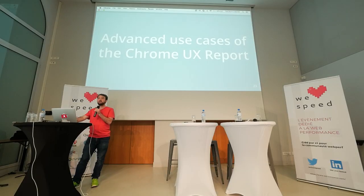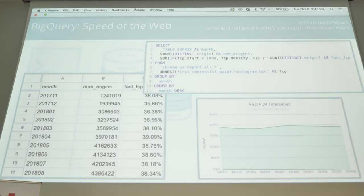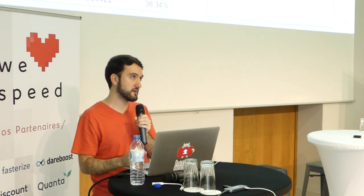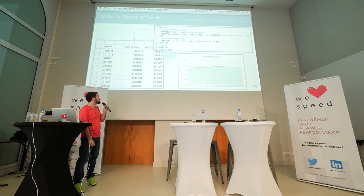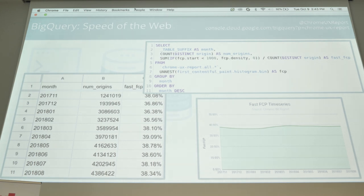So I want to leave you with some advanced examples to provide some inspiration for interesting analysis you can do yourselves. We looked at how fast a particular origin is — let's try to answer: how fast is the web and is it getting faster? We can aggregate the data for all origins and get an average performance across the web. It's not weighted by site popularity, but this is a good enough approximation. We can see that less than 40% of FCP experiences qualify as fast — so we still have a long way to go. That number is fluctuating but not really going up or down overall; again, this is just about nine months of data.